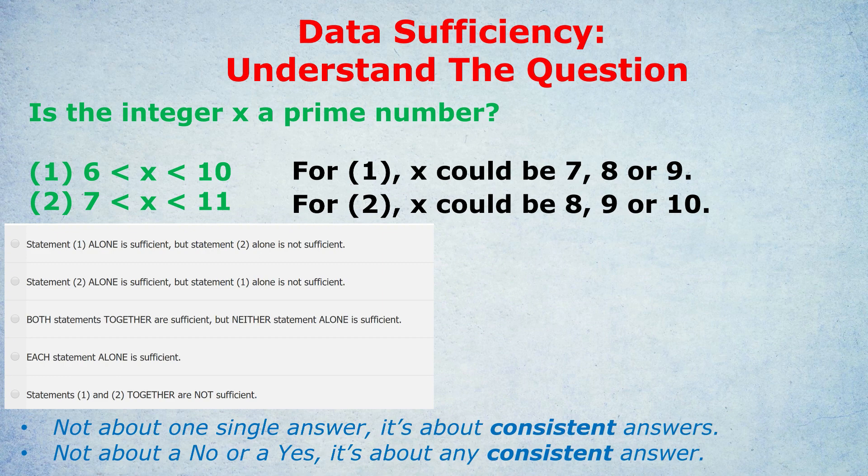The options that statement 2 gives us would be 8, 9, or 10. Now, just because there are three different answers doesn't mean the statement is automatically insufficient. In fact, here, the answer is sufficient. 8, 9, and 10 are all non-prime numbers. None of them are prime numbers.